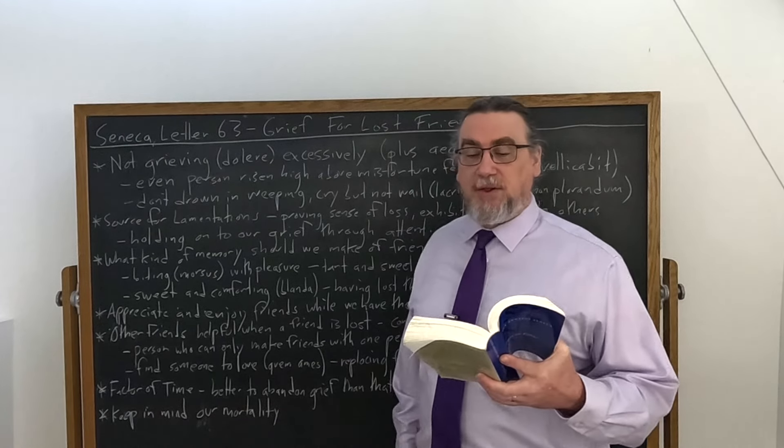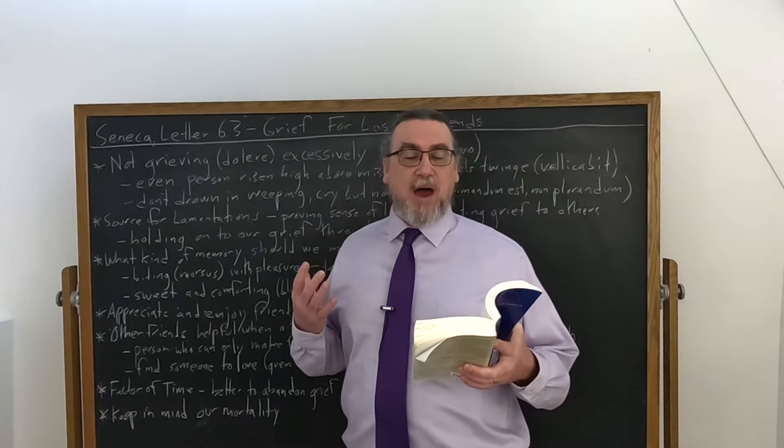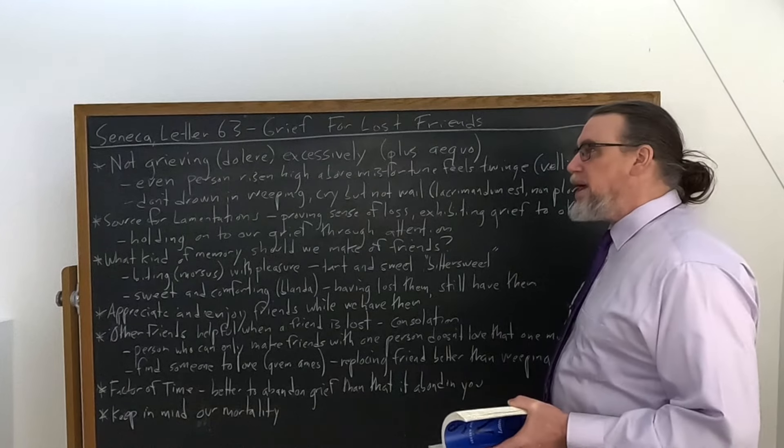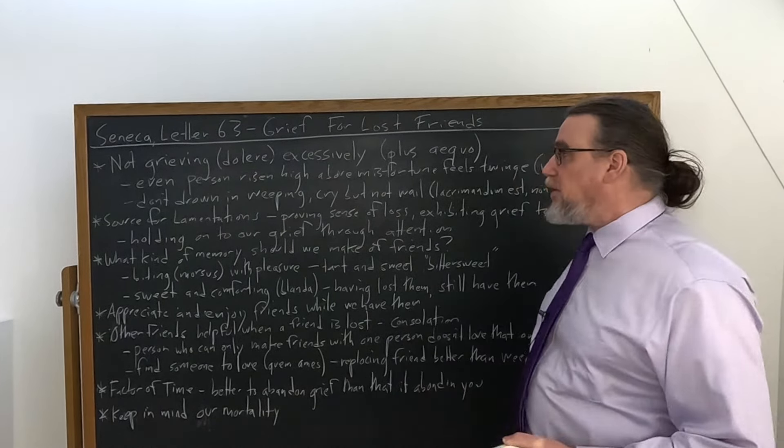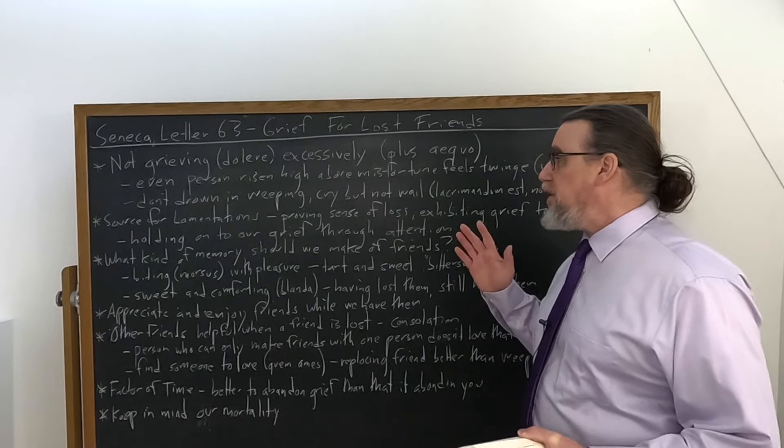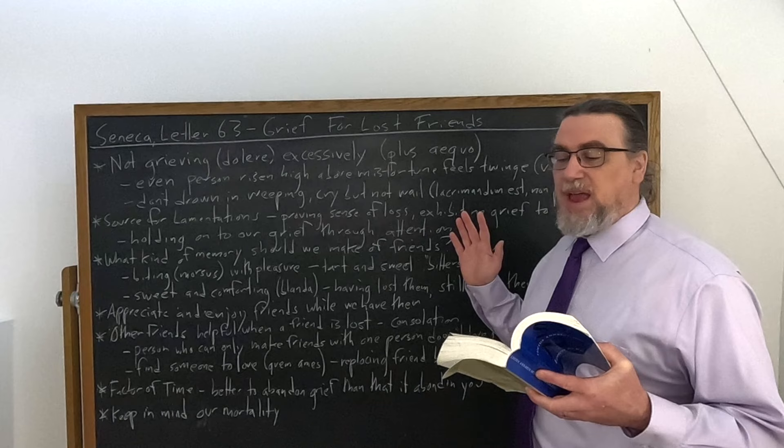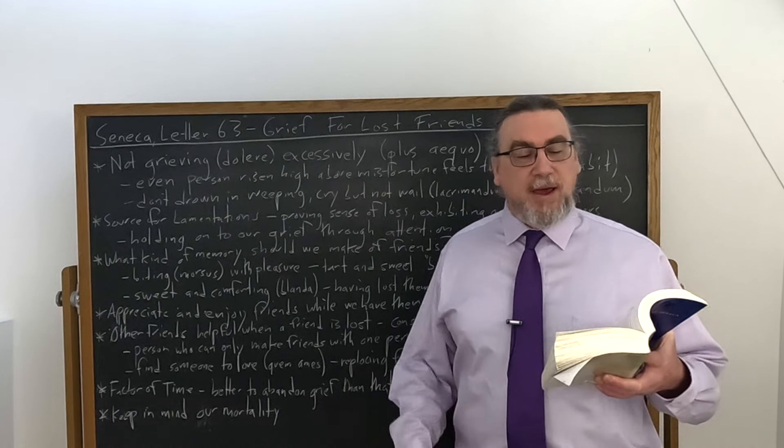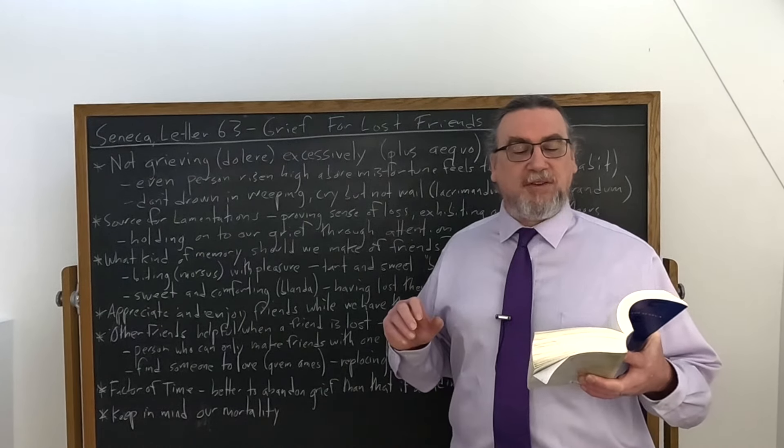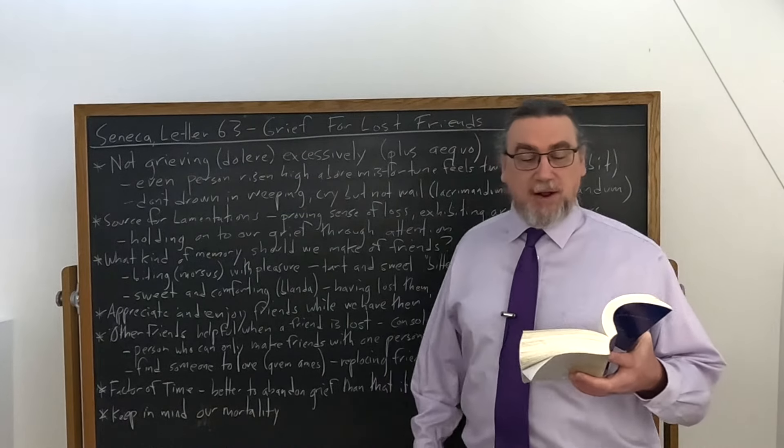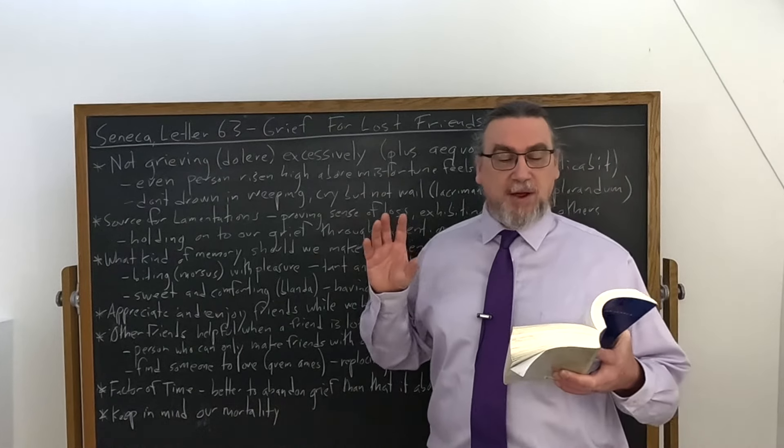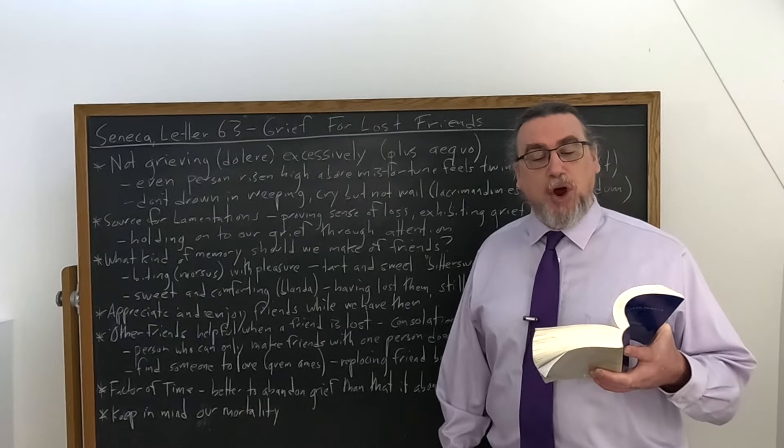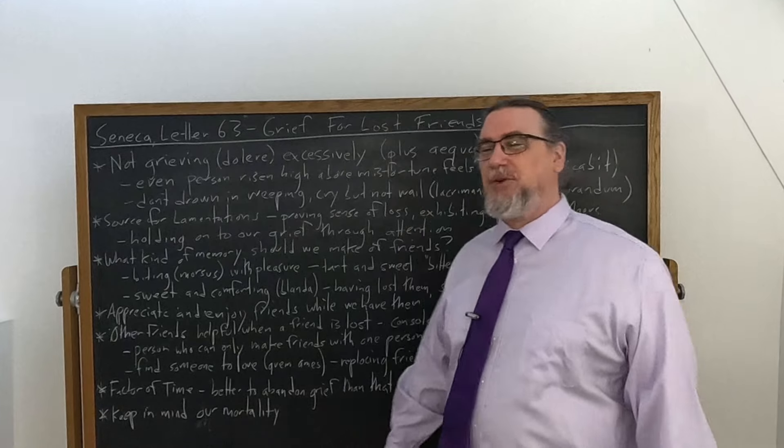But he tells us even this can come to have its own kind of pleasure. And he brings up his friend, Otulus, who says, the memory of friends who have died gives a pleasure like that of apples. Now, notice the culinary or gustatory metaphors here or reference points, analogies. We feel a sense like apples that are both tart and sweet or like the pleasing acidity of an old wine. And he says, after time, all that pains us is extinguished. Only the pleasure remains. And then he goes on and says, thinking of friends safe and sound is cakes and honey, just all sweetness. Remembering those who have gone is bittersweet. But who would deny that sharp and even bitter flavors are sometimes to our taste?